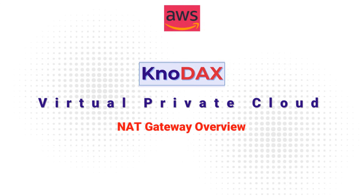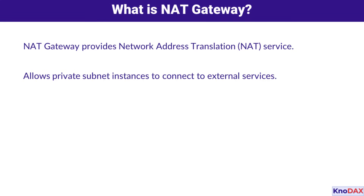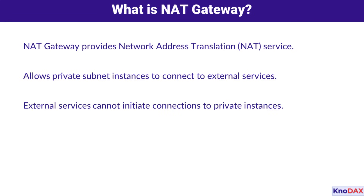Welcome! Let's dive into the world of NAT gateways and their critical role in AWS Virtual Private Cloud, or AWS VPC. What exactly is a NAT gateway? Simply put, it's a service that handles network address translation, or NAT. It allows instances in private subnets to connect to external services, like downloading updates or patches. These external services can't initiate connections back to your private resources, ensuring security.